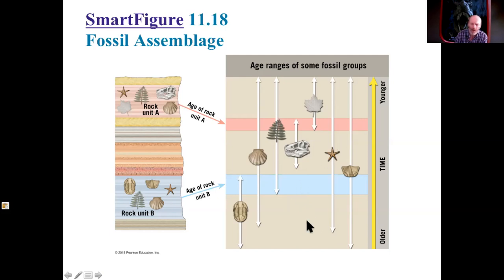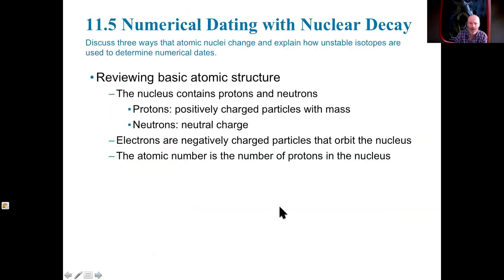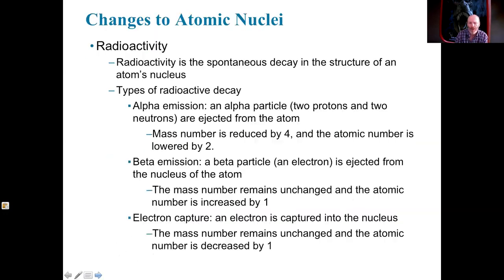Starfish cover almost the whole gamut we have here. So we can tell relative to each other: if we find this, it's going to be younger most of the time than that. If we find this, it's definitely younger than that. That's how we begin to put things together. We can also numerically date things with nuclear decay and radioactivity.